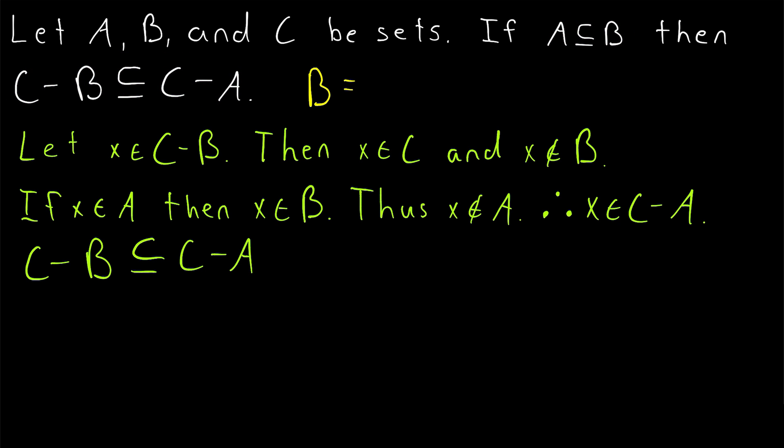For example, imagine that the set B just so happens to be equal to C. Then, C minus B will be the empty set, and thus will certainly be a subset of C minus A, no matter what C minus A is, because the empty set is a subset of every set.